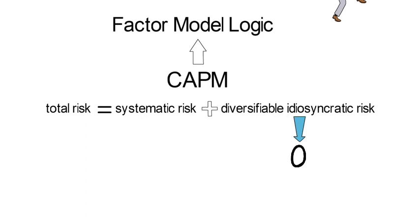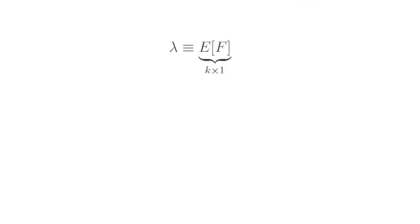Now to formalize these ideas, let's do the following. Assume that capital F is a matrix of excess returns with dimensions k times t. Since these excess returns are tradable, the market price of risk lambda is simply the expectation of F.